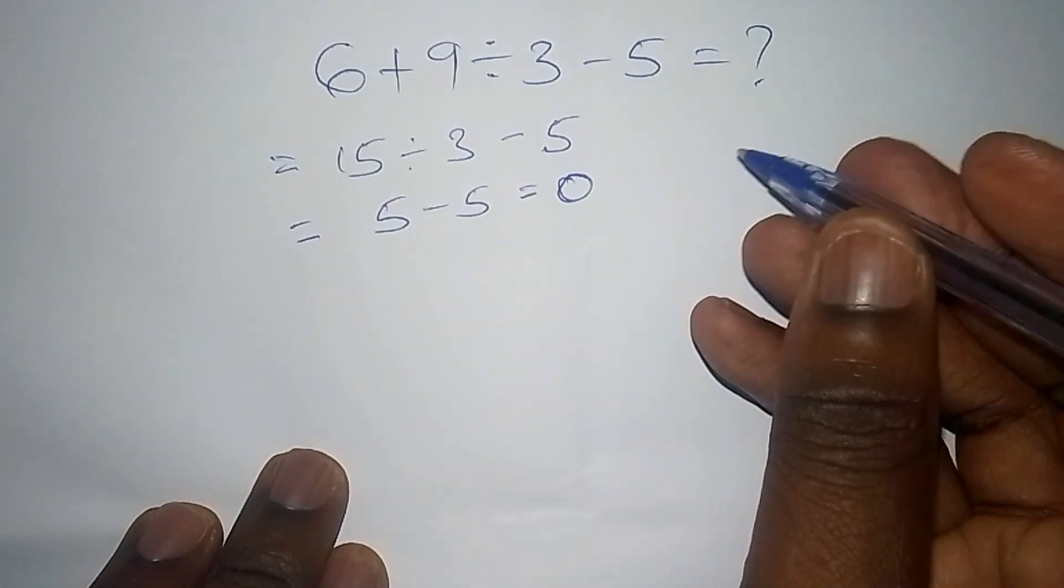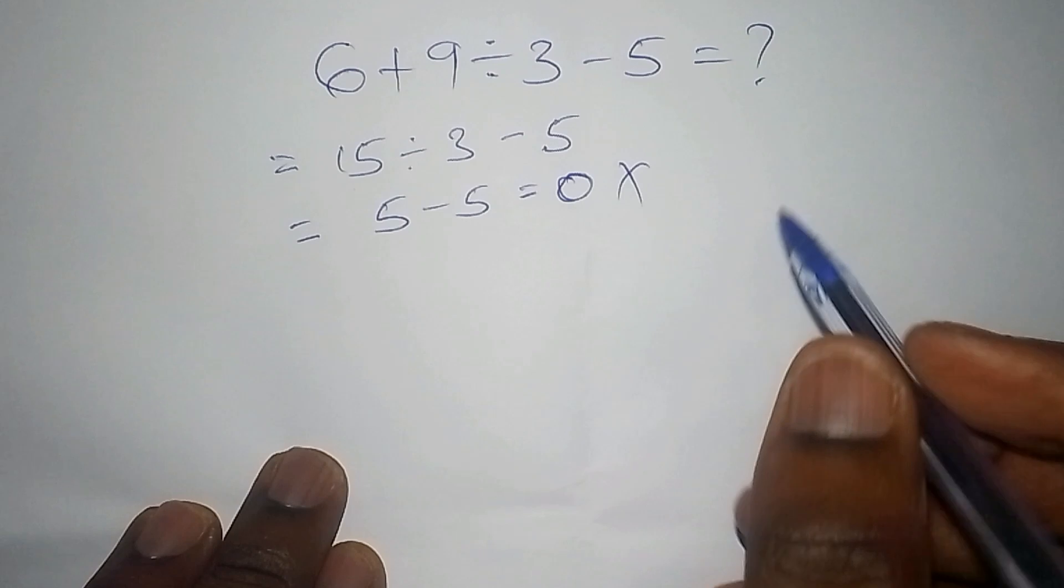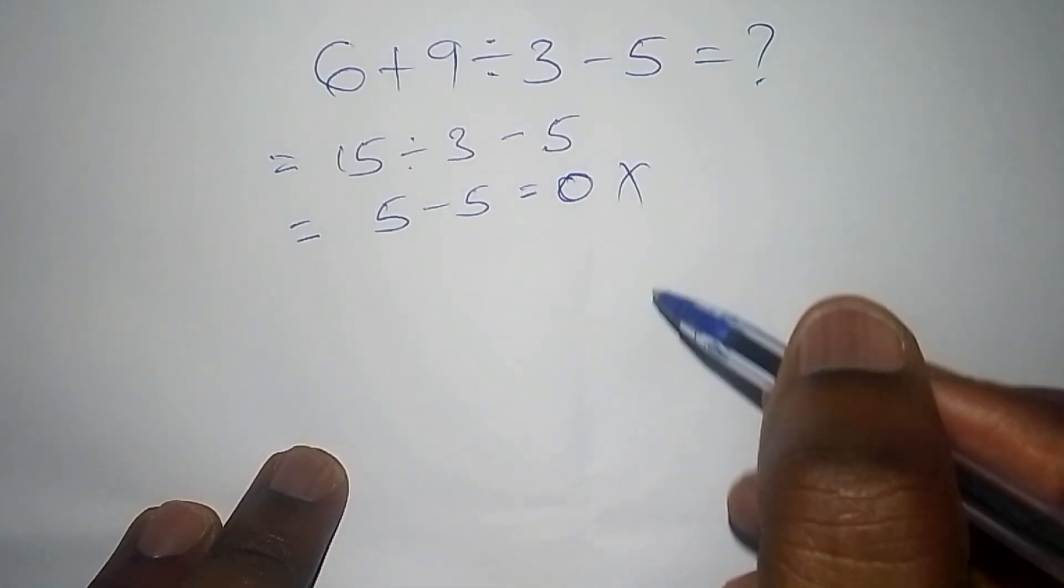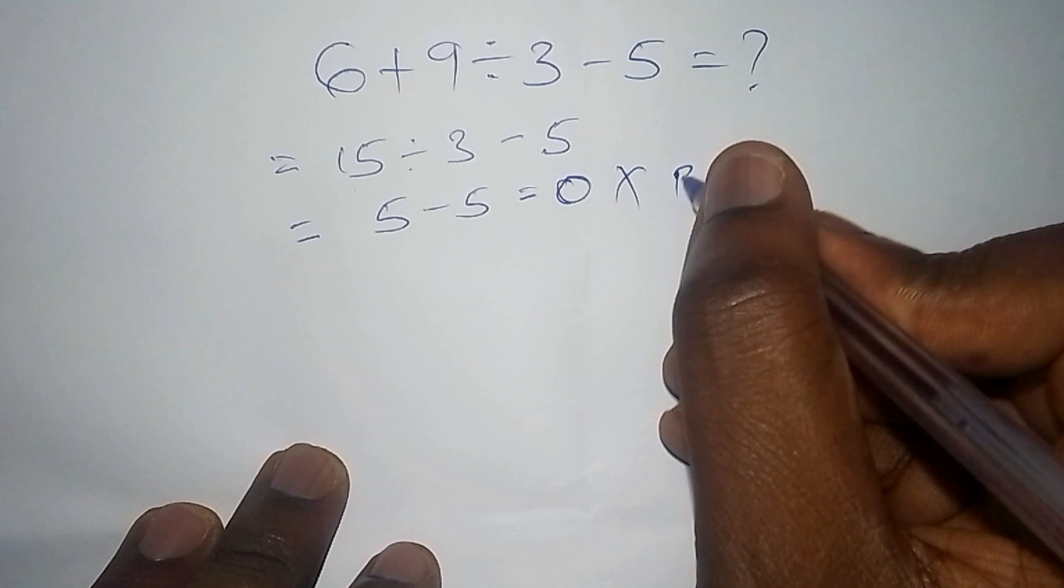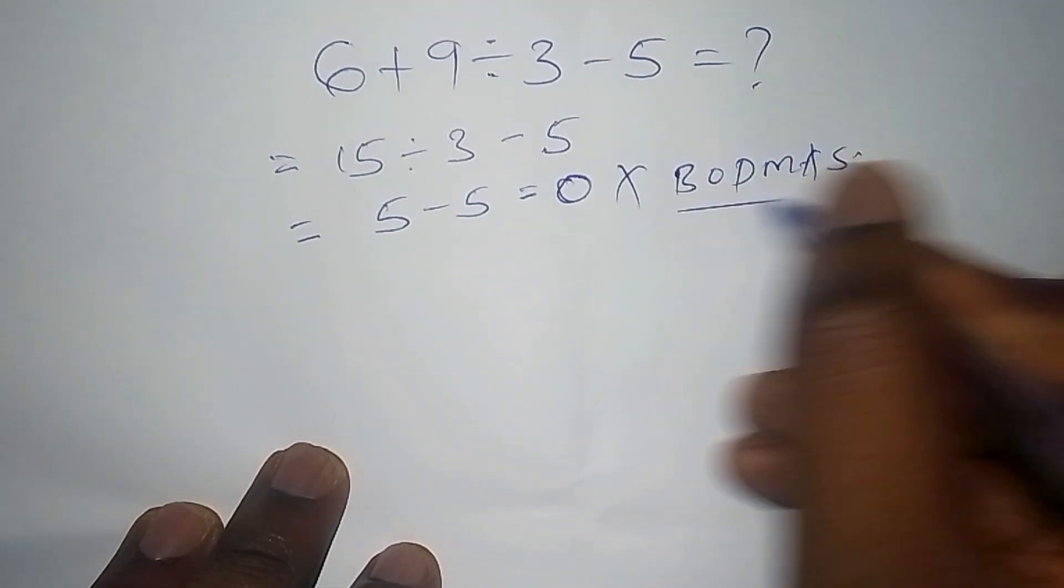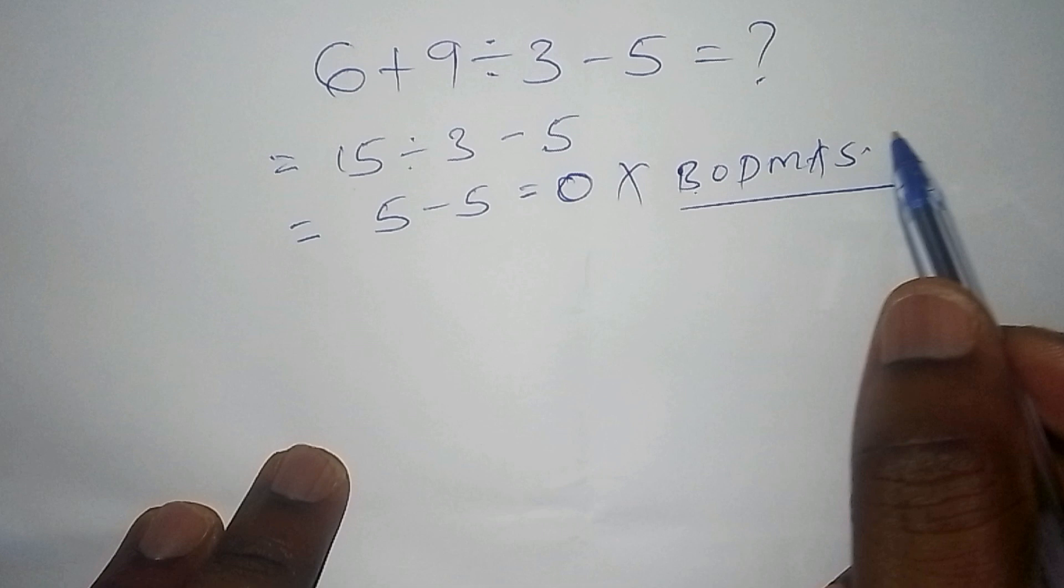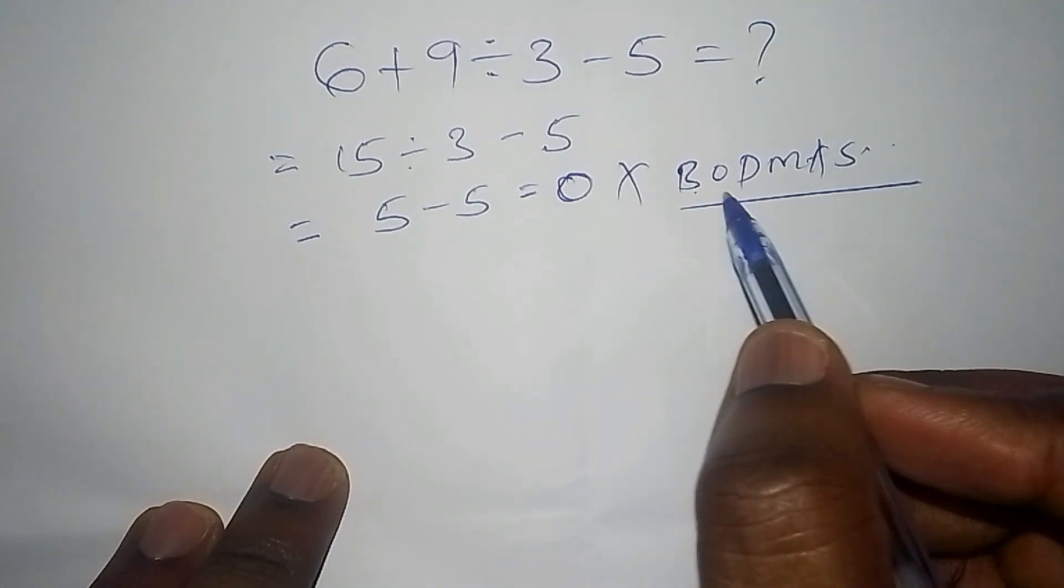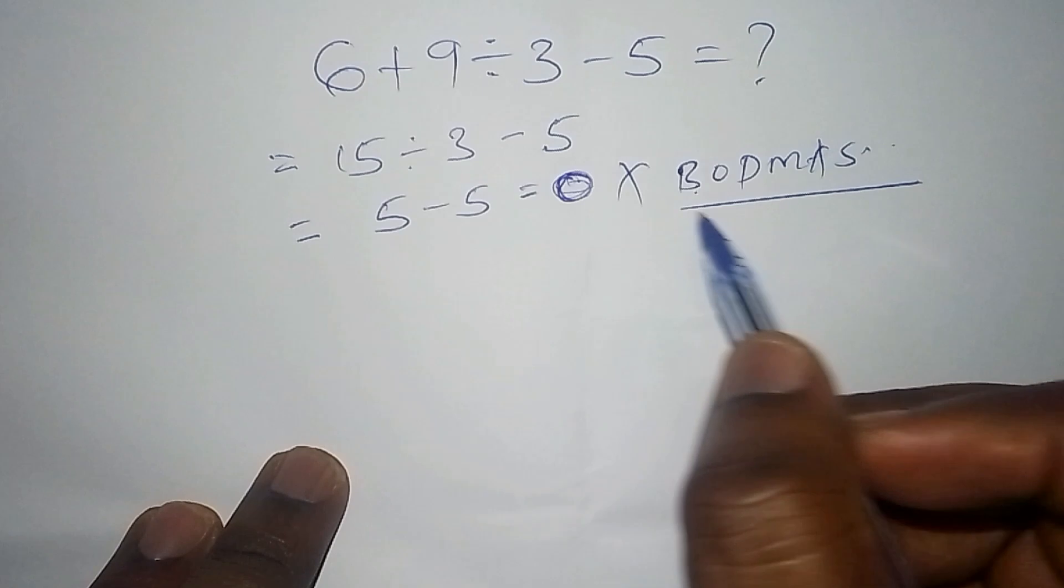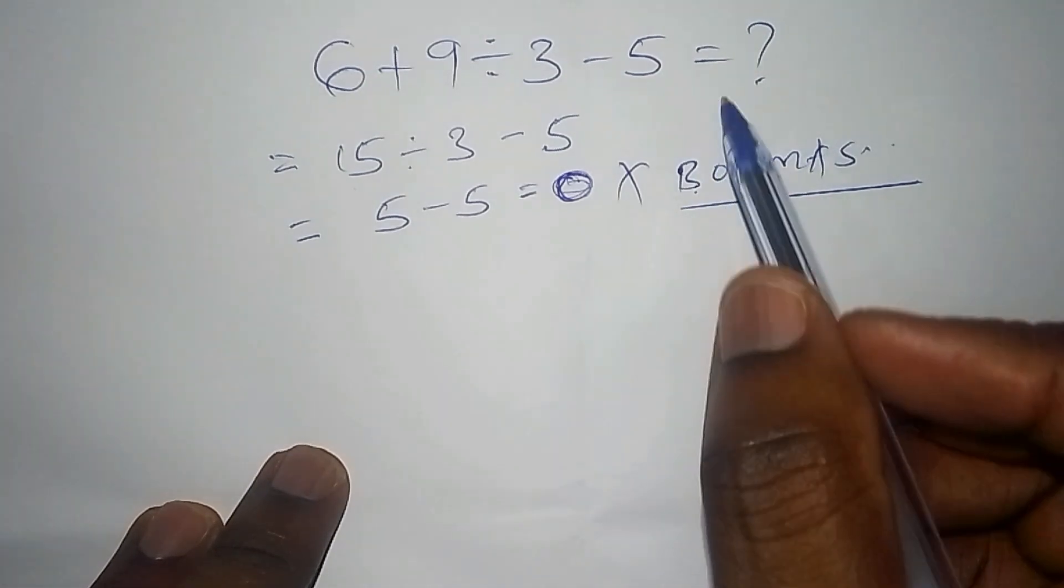When you get your answer as 0, it is a wrong answer. Reason: you have not followed something I want to introduce to you right now. There is something called BODMAS. Whenever you work out BODMAS, you're going to use the correct order of operation. You didn't use BODMAS, that's why you end up with the wrong answer that is 0. Come with me to the end so we can solve this maths problem.